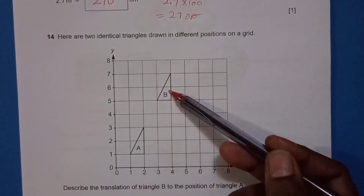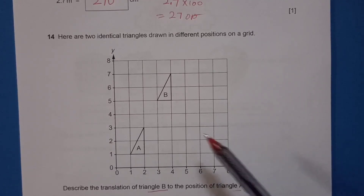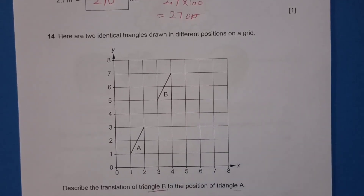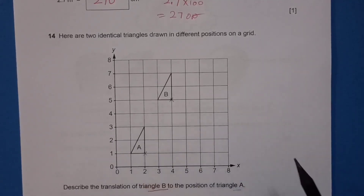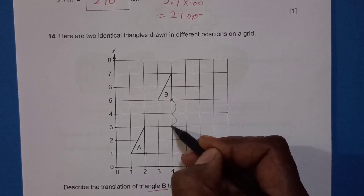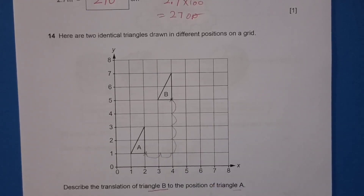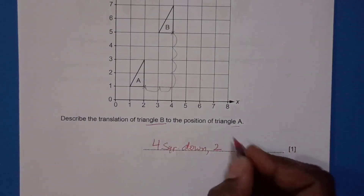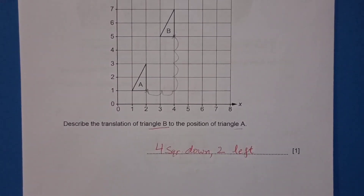Question 14: Here are two identical triangles in different positions on a grid. Describe the translation from Triangle B to Triangle A. Choose a corner and track its movement to the corresponding corner on Triangle A. It moves 4 squares down and 2 squares to the left. So the translation is 4 squares down and 2 squares left.